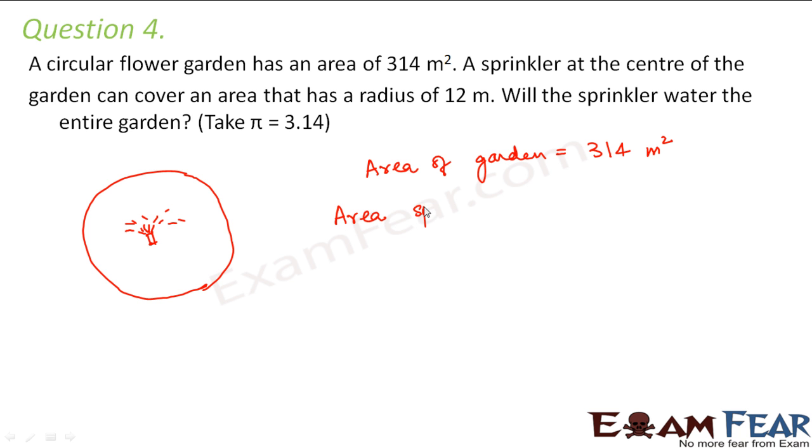The area that the sprinkler covers would be π r squared. r is given as 12 meters, so π × 12 × 12, that is 144 × 3.14, which equals 452.16 meter square. So this is the area that the sprinkler covers.